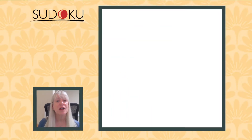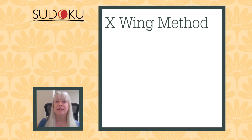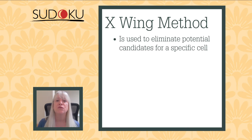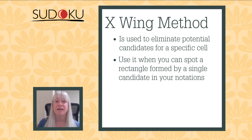First off, let's try the x-wing method. This method is used to eliminate potential candidates for a specific cell. It's used when you can spot a rectangle formed by a single candidate in your notations. Either parallel pair of sides on the rectangle must have the candidate in exactly two spots for this method to work.